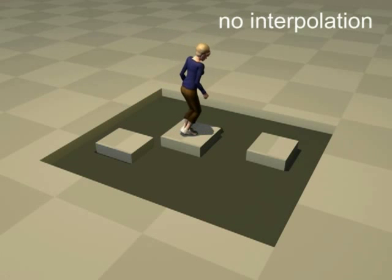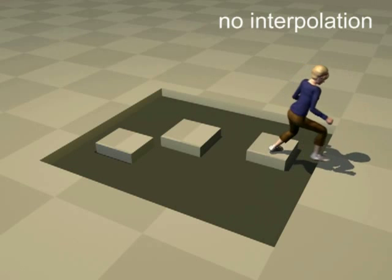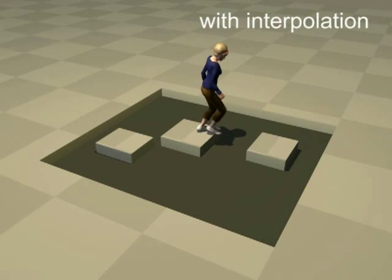In this example, the character attempts to step on the columns. Interpolation produces solutions with more optimal strategies.